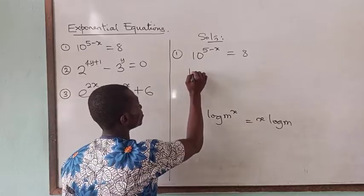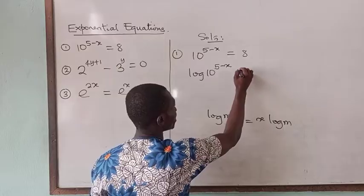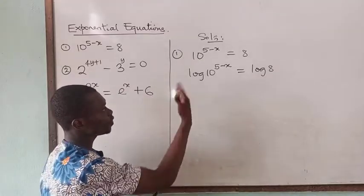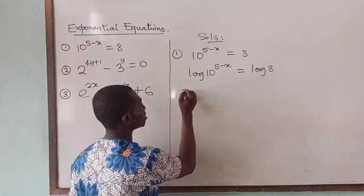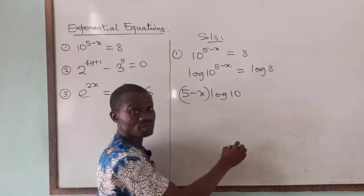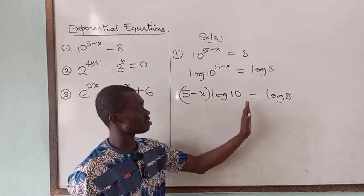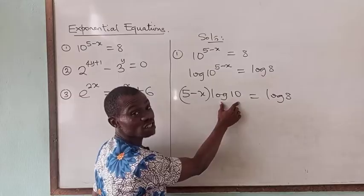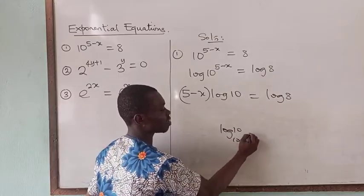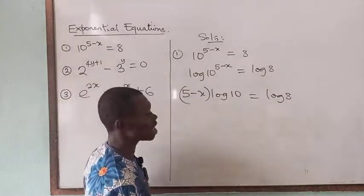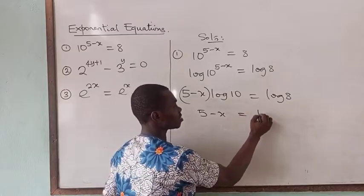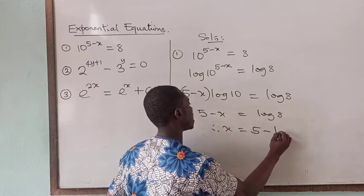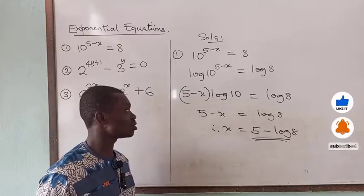We take the log of both sides, giving us log of 10 raised to power (5 minus x) equal to log of 8. Applying the rule, we get (5 minus x) times log 10 equal to log 8. Since this is a common logarithm, the base is 10, so log 10 base 10 equals 1. That leaves us with just 5 minus x on the left-hand side equal to log 8. Making x the subject gives us x equal to 5 minus log 8. That is the solution to number 1.